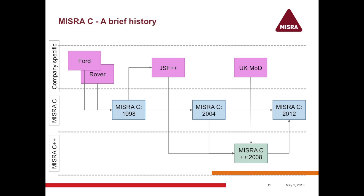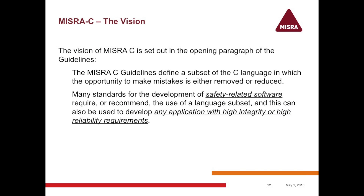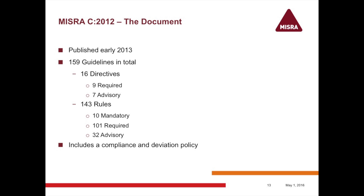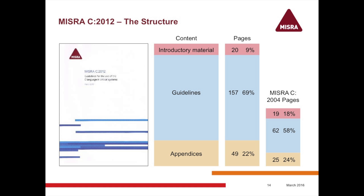A little diagram shows the potted history starting from the original work at Ford and Rover. MISRA C 98 was adopted by JSF for their coding standards, which then fed into the production of the C++ MISRA guidelines. Then in 2012, we produced a new version bringing us more up to date with C99. We ended up creating more rules, but on the whole they're much more focused and targeted. It's a bigger book — much thicker, more guidelines — a step forward in being a more coherent, targeted look at the problems of the C language.